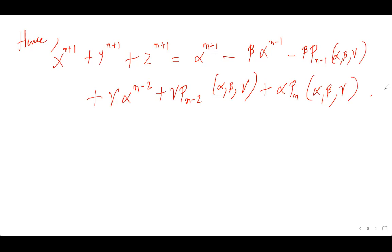Hence we get: X to the power N+1 plus Y to the power N+1 plus Z to the power N+1 equals alpha to the power N+1 minus beta times P_{N−1}(alpha, beta, gamma) plus gamma times P_{N−2}(alpha, beta, gamma) minus alpha times P_n(alpha, beta, gamma). Thus we have proved that X to the power N plus Y to the power N plus Z to the power N can be expressed as a polynomial in alpha, beta, gamma with integer coefficients. The first part is proved for all N greater than or equal to 1 by induction.